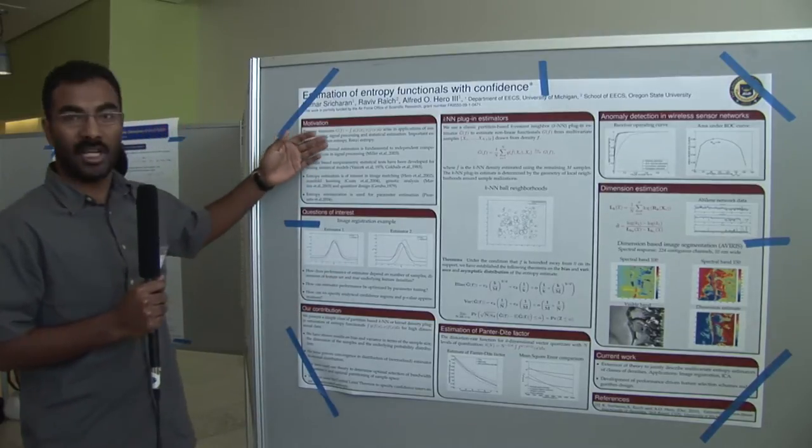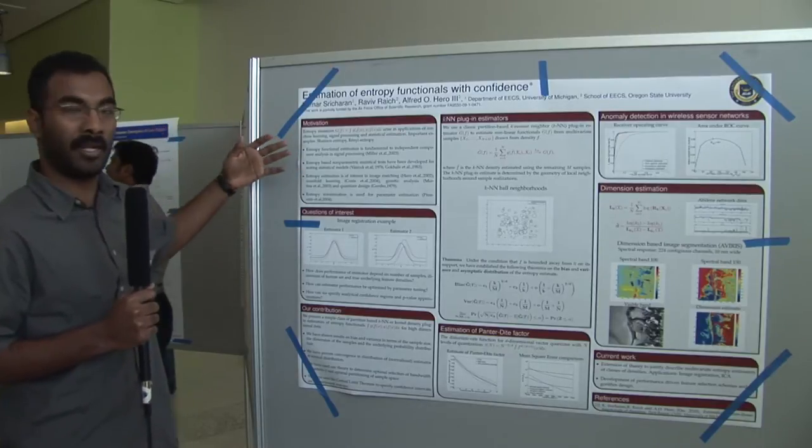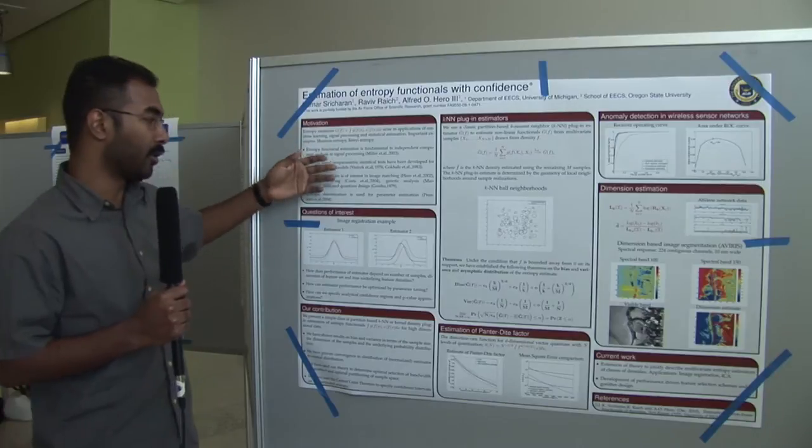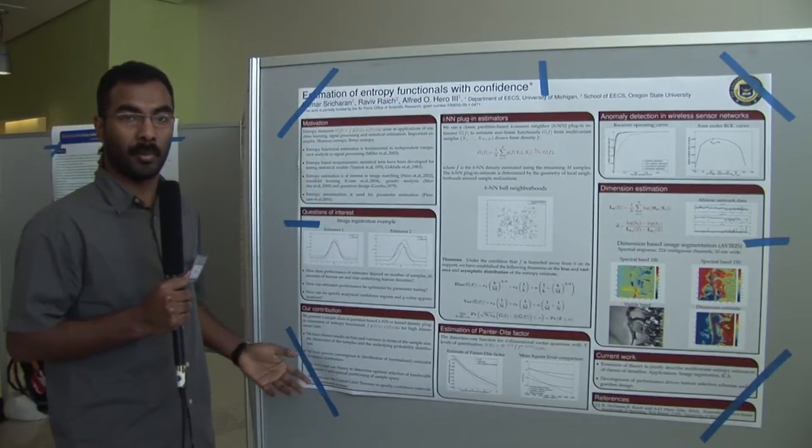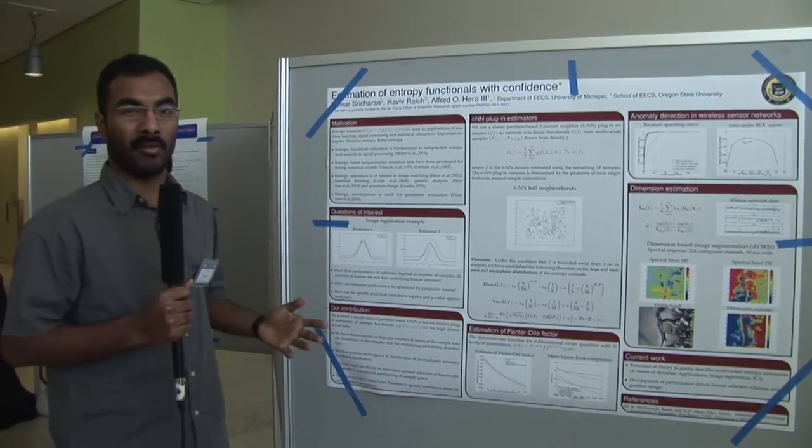Important examples are Shannon and Renyi entropy. Entropy is used in many different applications, from ICA to nonparametric statistical tests. There have been several different estimators of entropy proposed; however, rates of convergence of these estimators are not available in general.